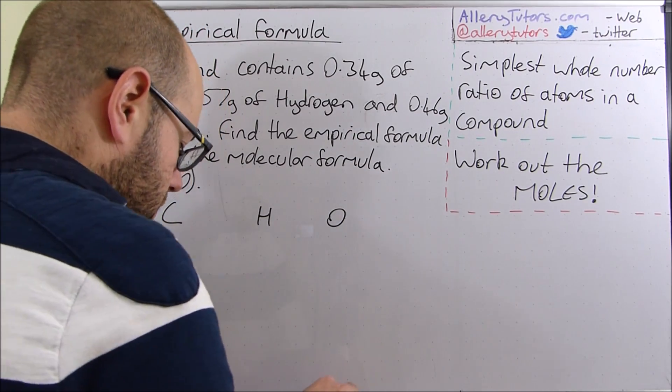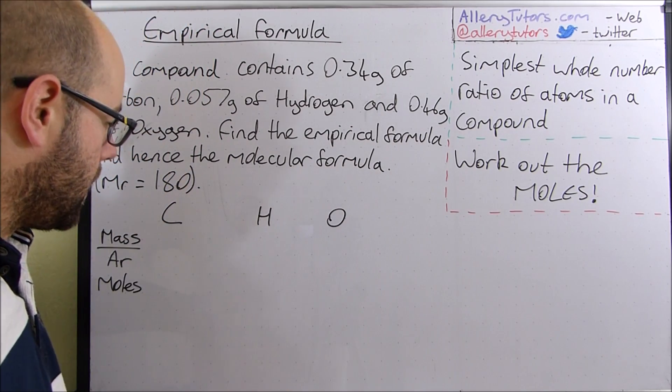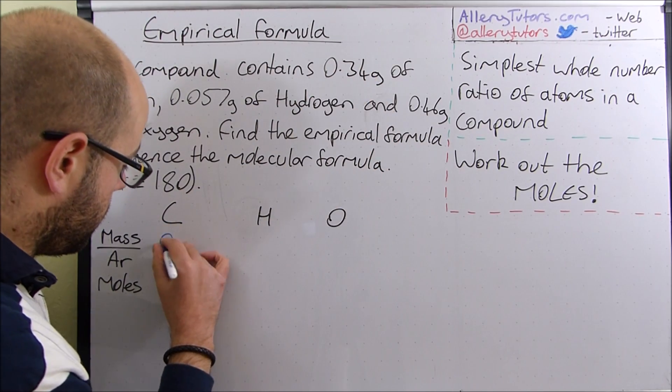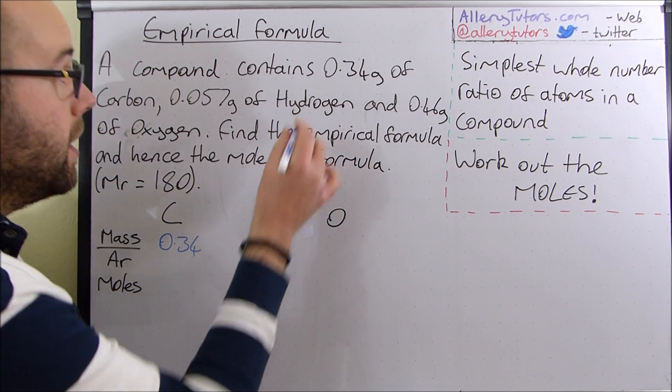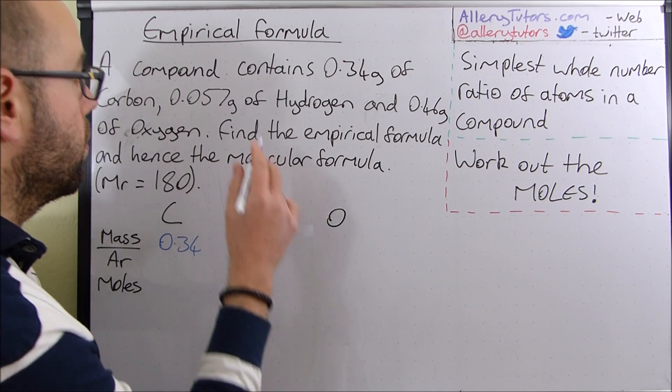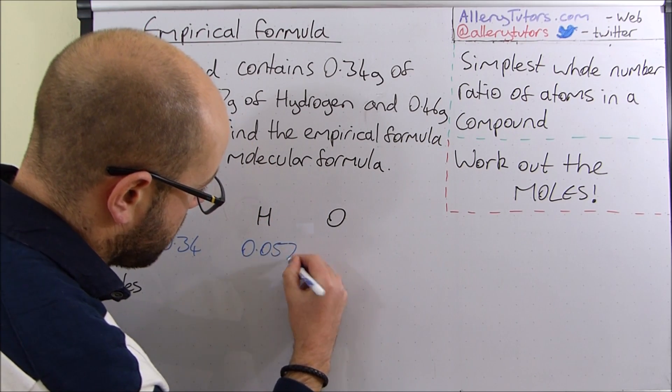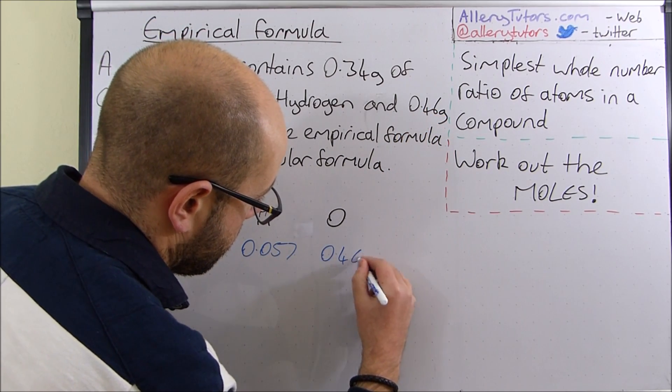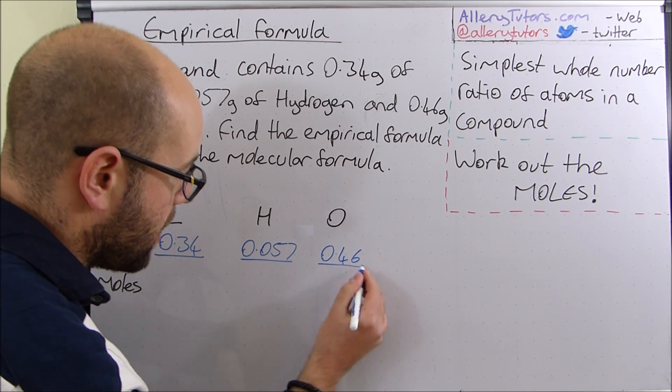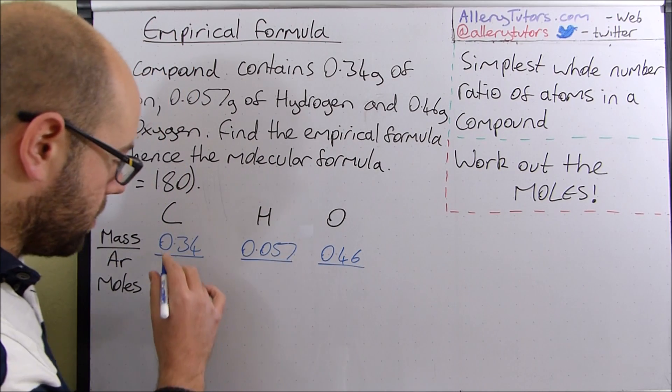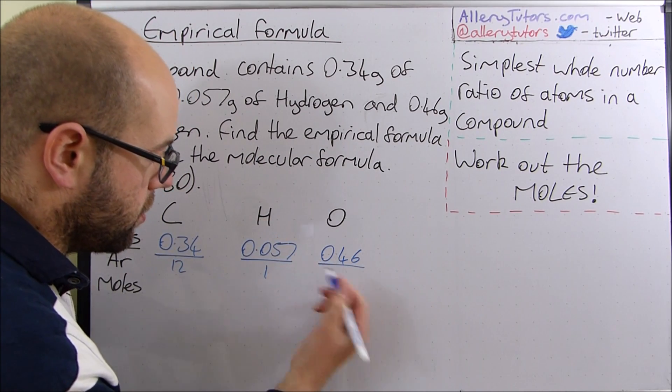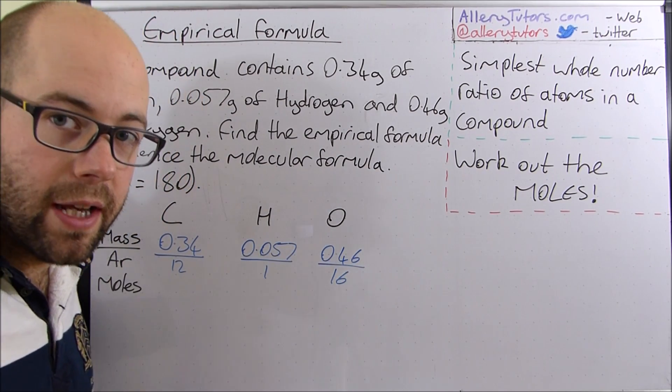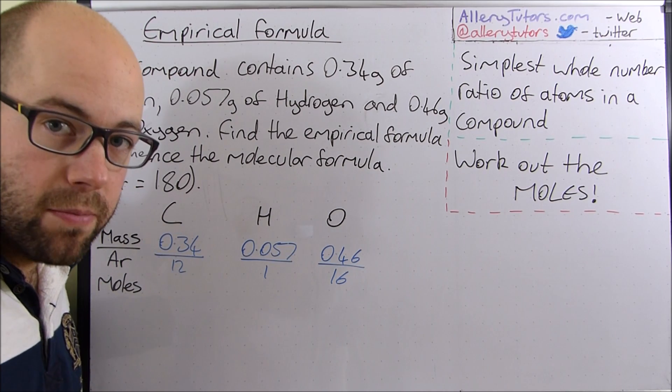So let's put our numbers in. The mass of carbon we said was 0.34 so we're going to put 0.34 grams on the top. Mass of hydrogen is 0.057 grams of hydrogen and the mass of oxygen is 0.46. And we're going to divide all of them by their atomic masses. So carbon's atomic mass is 12, the atomic mass of hydrogen is 1 and the atomic mass of oxygen is 16. Now we put all these into the calculator and then we'll be able to find the number of moles of each of them.